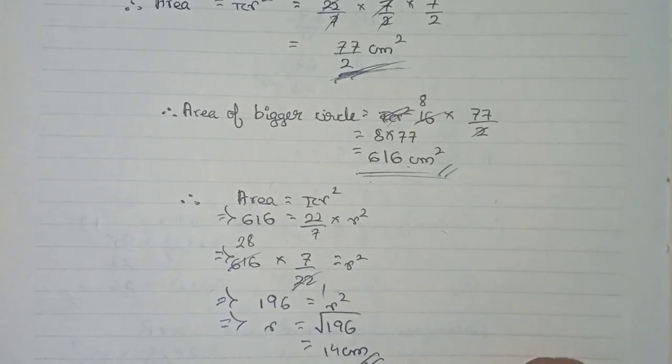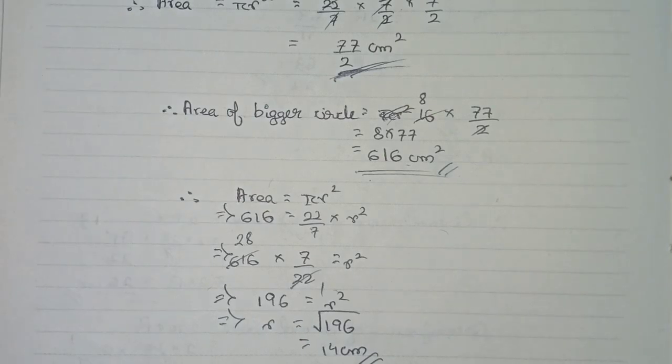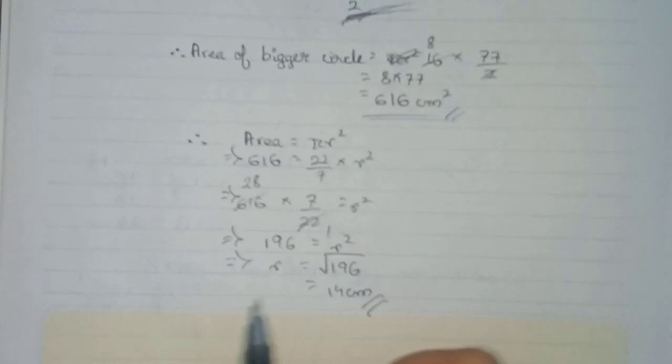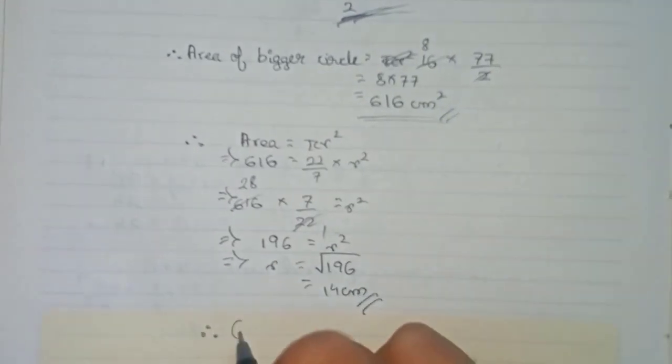From this information, now have to find out the circumference of the circle. That is the last step. Therefore circumference is equal to 2 pi r formula.